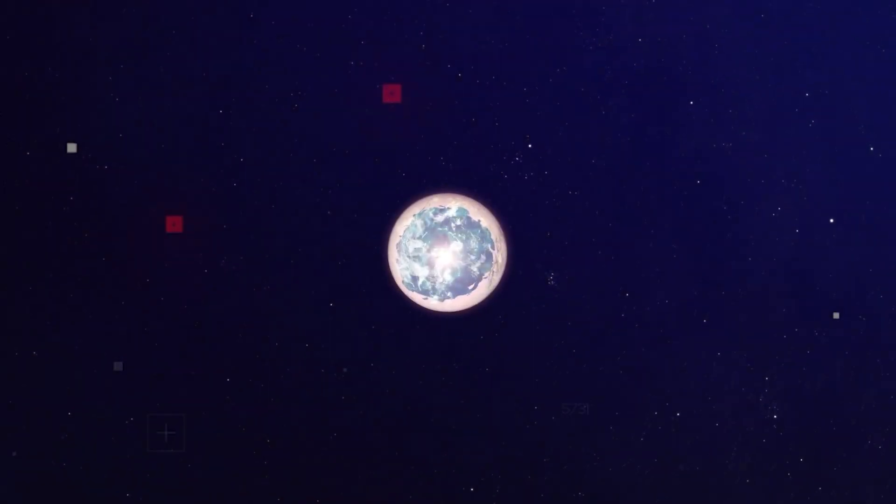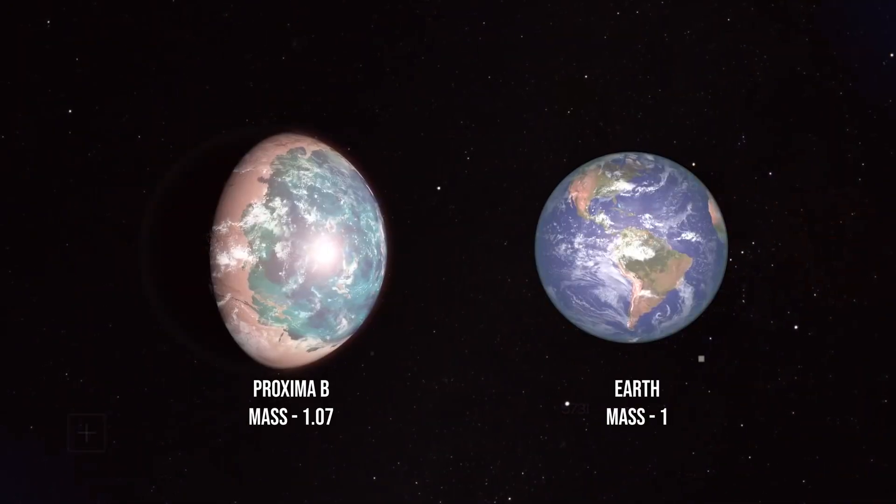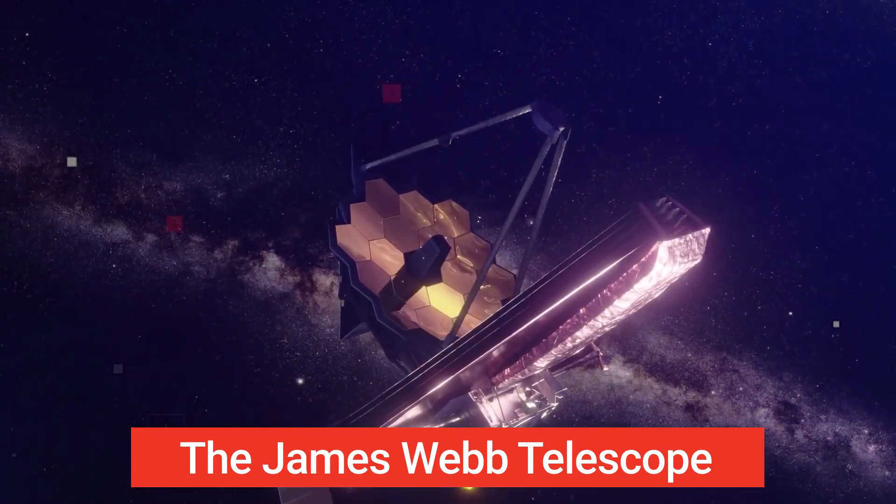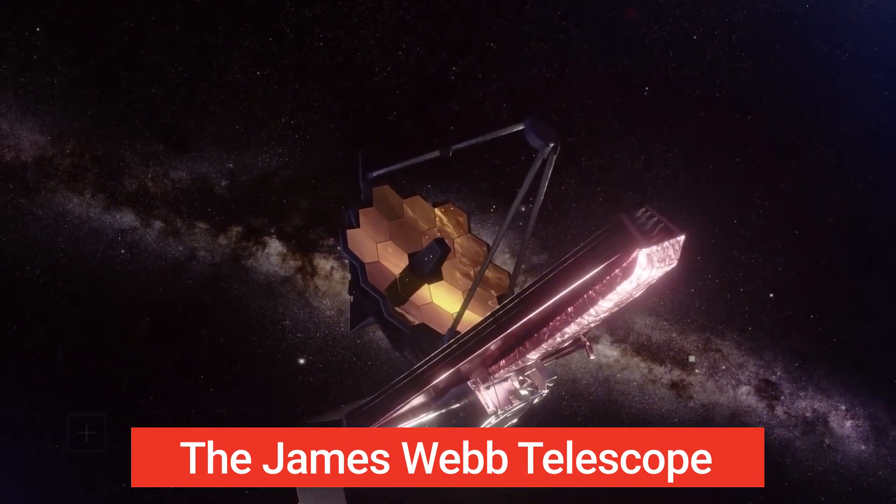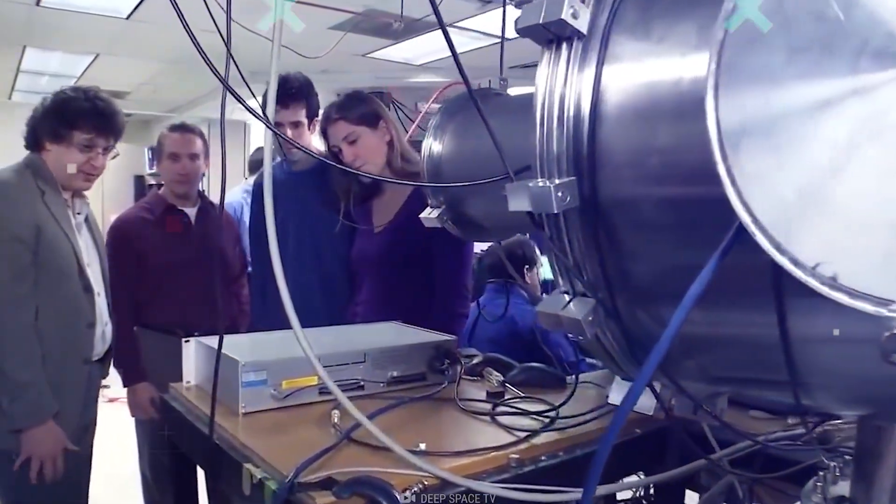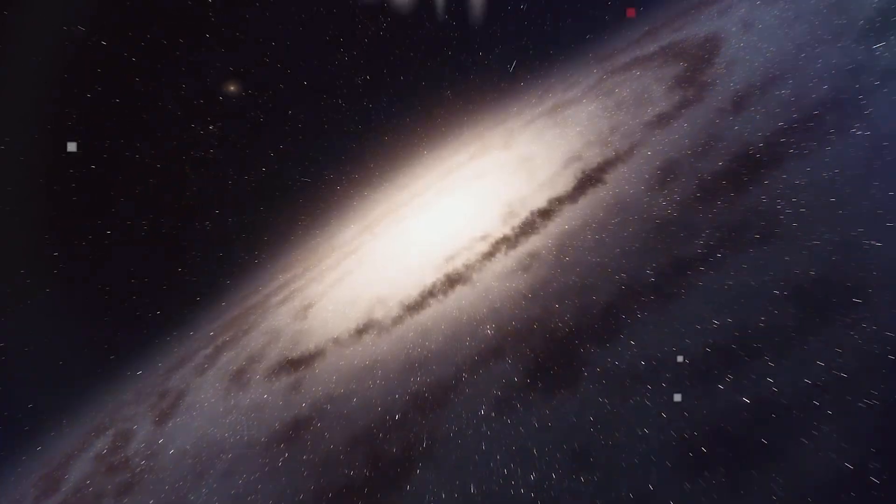This unique stellar environment presents both challenges and opportunities for studying the exoplanet's characteristics. The James Webb Telescope's infrared capabilities are crucial here, allowing researchers to detect the faint signals emitted by Proxima b against the backdrop of its parent star's light.